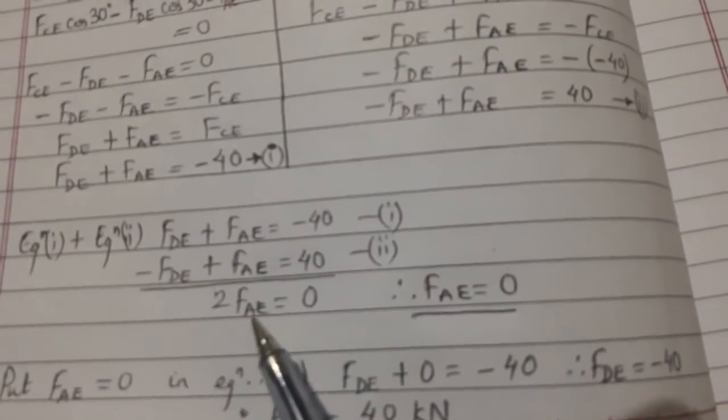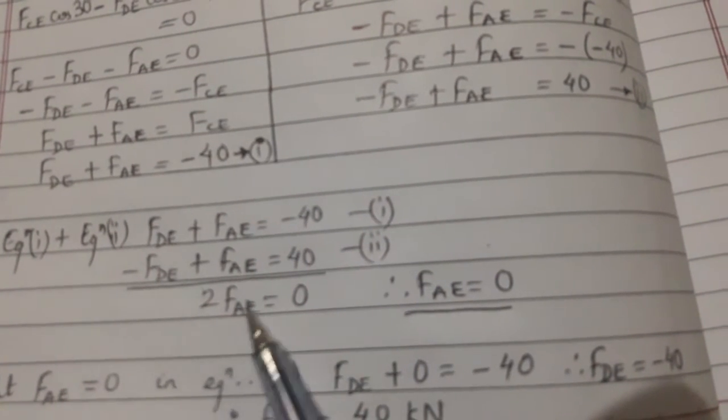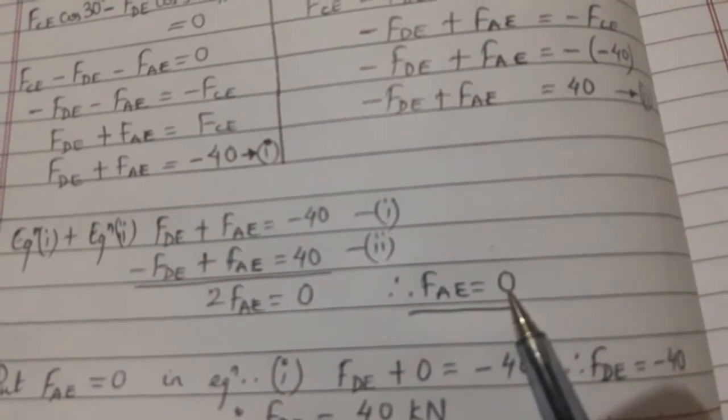So we got two equations. When we solved simultaneously, we got 2 FAE is equal to 0. Therefore FAE is equal to 0.